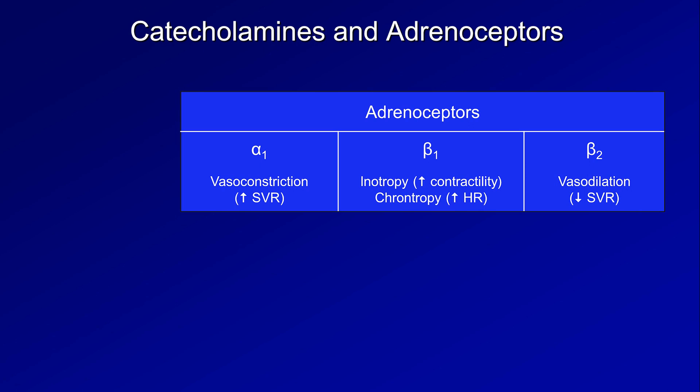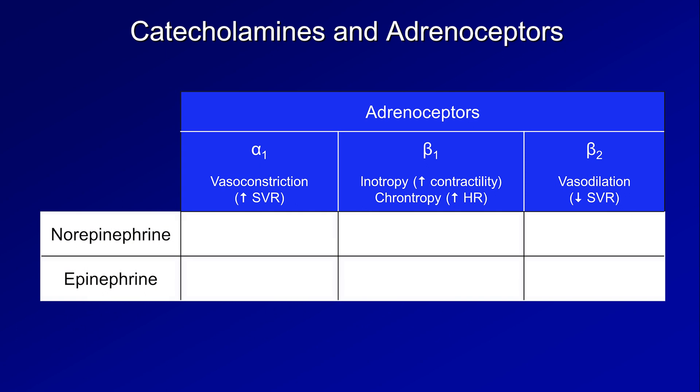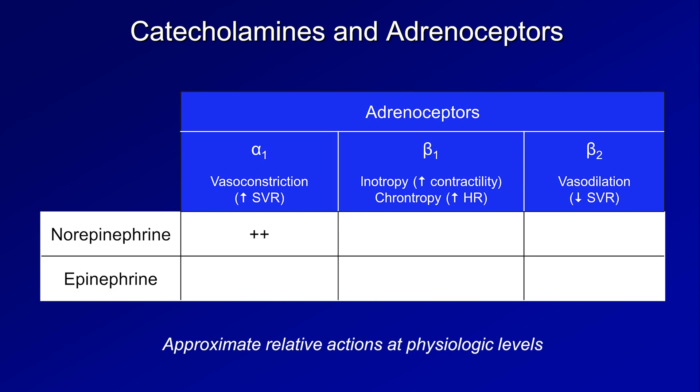Let's look at the two main endogenous circulating catecholamines: norepi and epi. At physiologic doses, norepi's main actions are on the alpha-1 receptor, with minor action at beta-1 and no action at beta-2. Epi's main action is on beta-1 and beta-2 receptors, with minor action on alpha-1. Thus, norepi contributes more to maintenance of sufficient blood pressure, because epi's beta-2 agonism partially cancels out its minor vasoconstrictive alpha-1 effect. At low doses, epi does not have a tremendous effect on blood pressure.